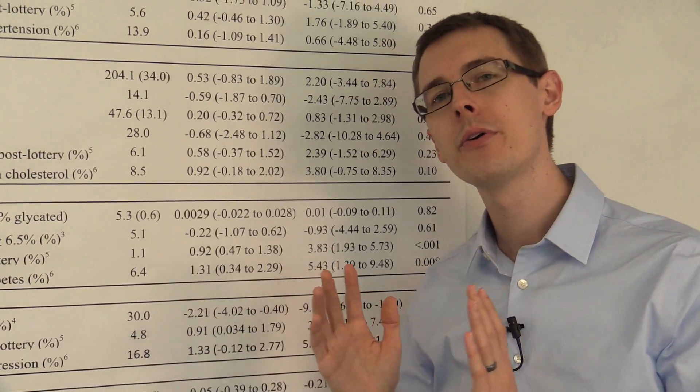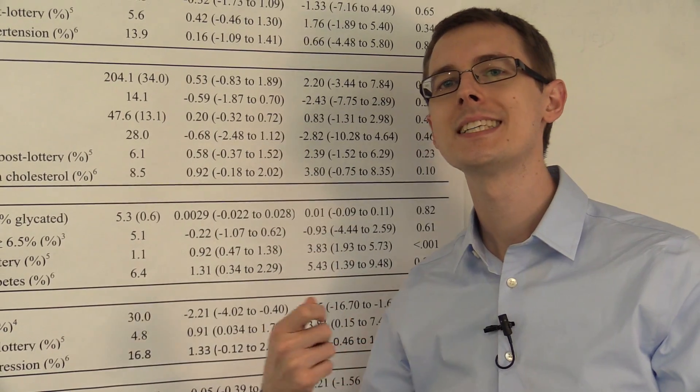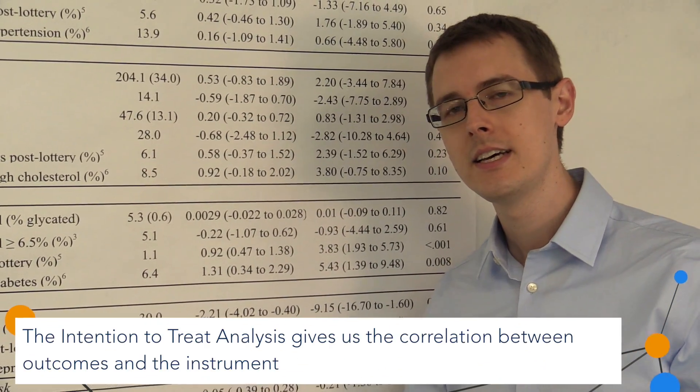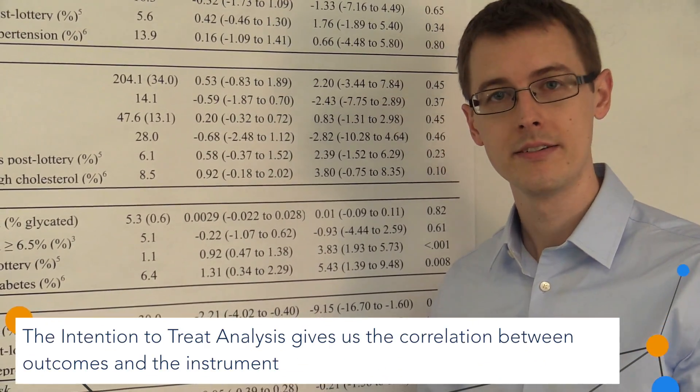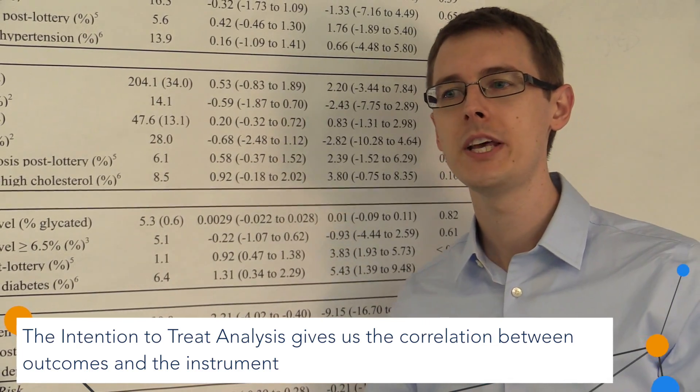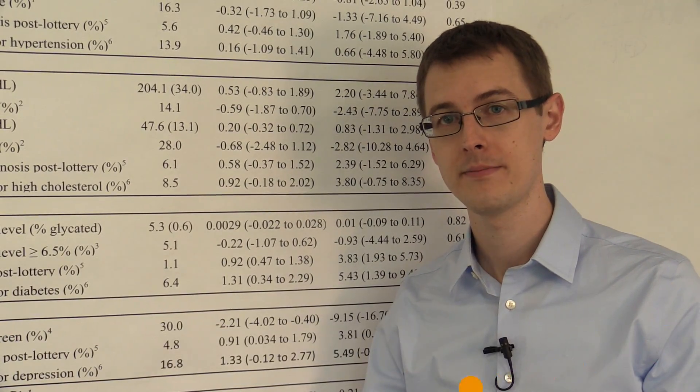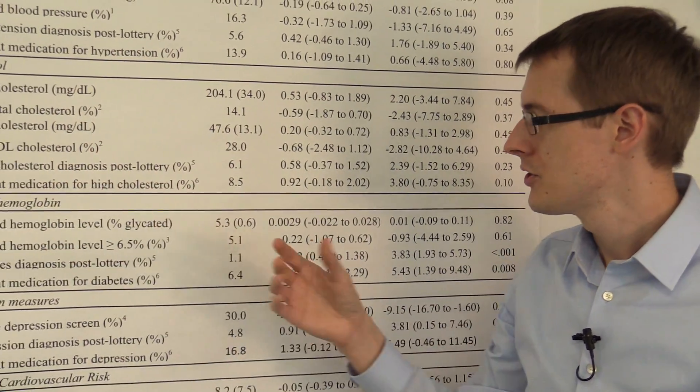Why is that? Because when we're analyzing noncompliance in experiments, our instrument is the treatment assignment variable, if you were assigned to get Medicaid or not. That's the instrument we're using. And then our treatment is whether you actually received Medicaid or not. And our outcome is any one of these.